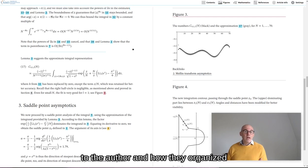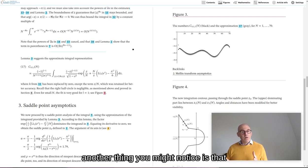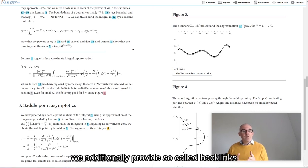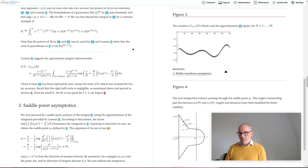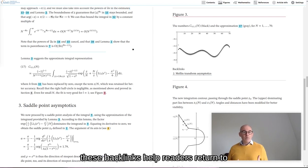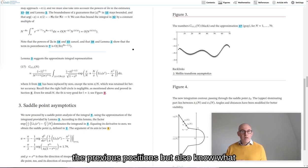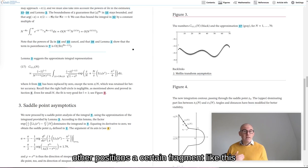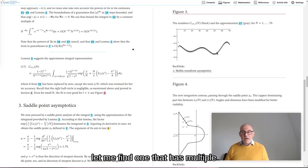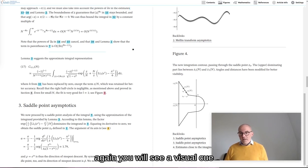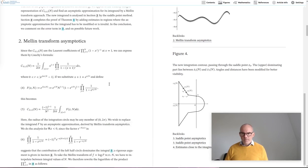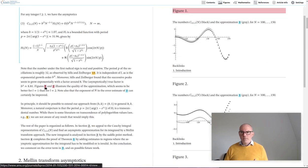All of this is, of course, up to the author and how they organized their content. Another thing you might notice is that we additionally provide so-called backlinks. Let me highlight them in the figure panel right now. Right there. These backlinks help readers return to the previous positions, but also know what other positions a certain fragment, like this figure, is actually being referenced at. Let me find one that has multiple backlinks, like figure 4, in this article. Again, you will see a visual cue. Let me find a link to figure 4, or maybe figure 1.